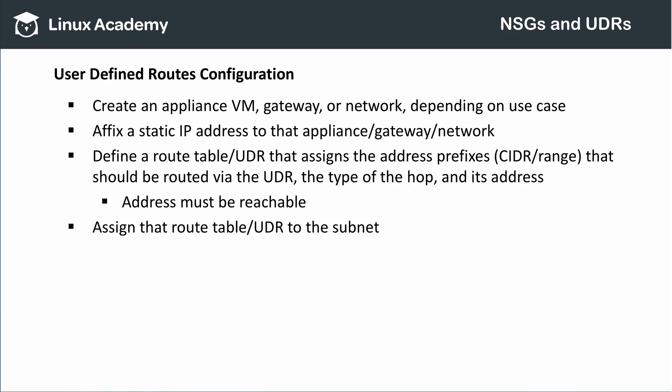Note that whatever IP address you provide to the hop has to be reachable from the network boundary taking on the UDR. In other words, if I have a subnet with an access control list rule that does not allow outbound internet traffic and I try to assign this UDR an internet hop type, then that UDR will be invalid. Finally, I assign the user-defined route — also called a route table — to the subnet.